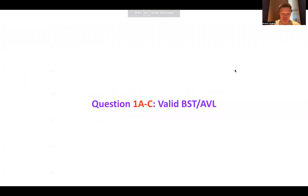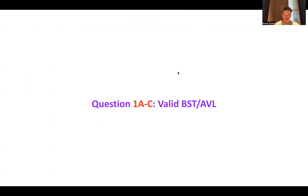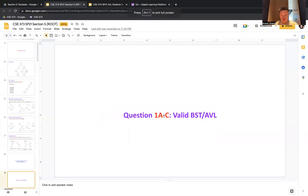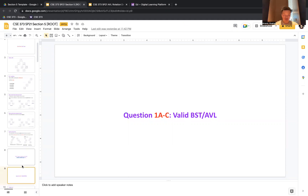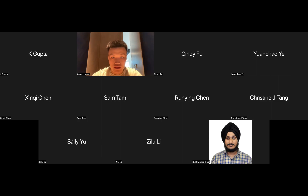Now that we've talked about BSTs and AVL trees, let's go over some problems from the section handout - questions 1A through 1C. These involve determining if a tree is a valid BST or AVL tree. Take a few minutes to look through these trees and try to determine if they're valid binary search trees, and if so, whether they're valid AVL trees. Then we'll come back and discuss.